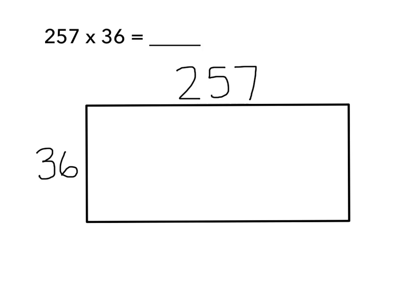The next thing that I need to do is break apart my array into more manageable pieces because I don't know how to solve 257 times 36 in my head. One way that I like to break down the numbers to make them more manageable is by thinking in terms of place value.